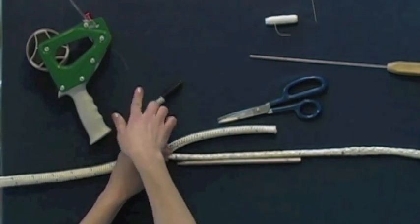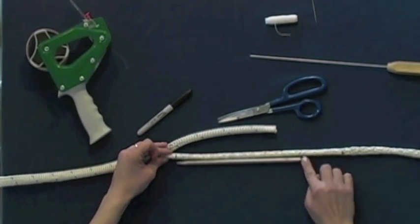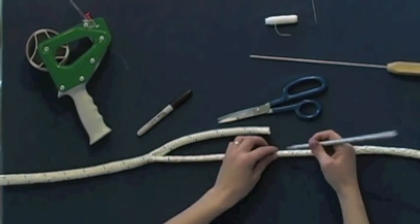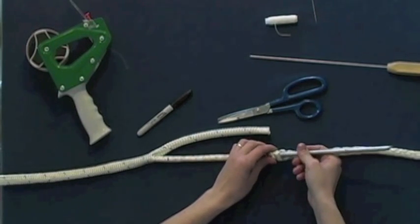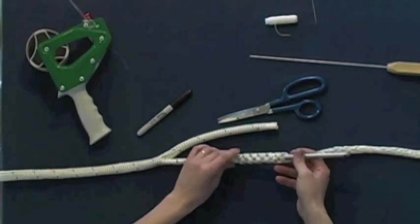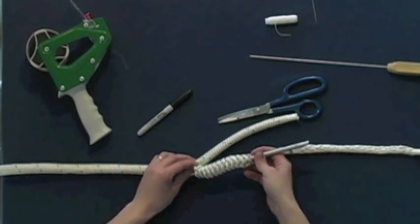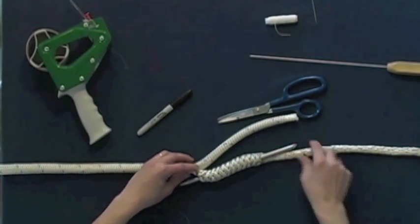Then, from your second mark on the core to your third mark, you will be inserting the fid. Insert at the second mark and come out at the third mark. This is how it should look.